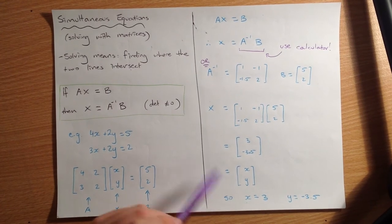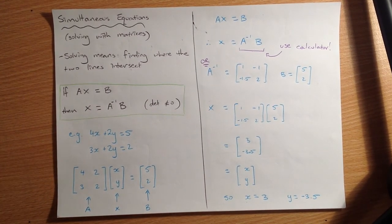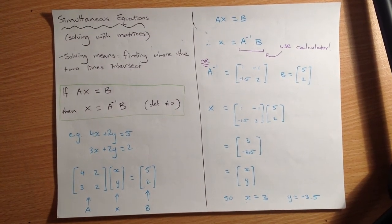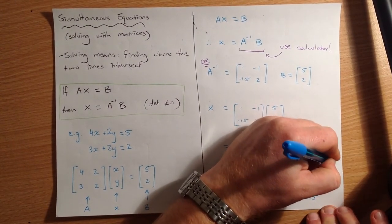So the solution to these simultaneous equations, where they cross, the coordinate that they cross on the graph is 3, negative 3.5. That's like a coordinate, I might just put that in for us. So our coordinate is 3, negative 3.5.